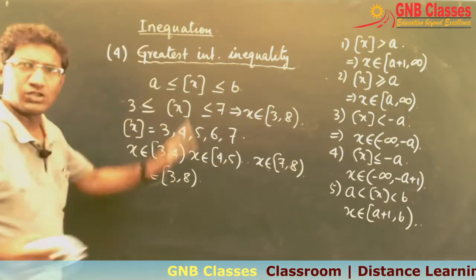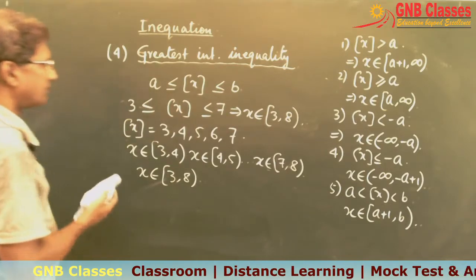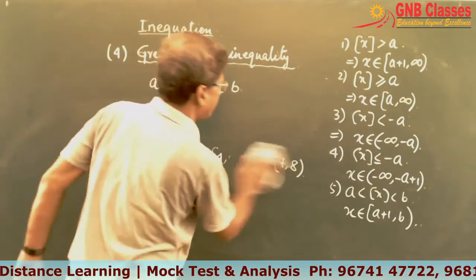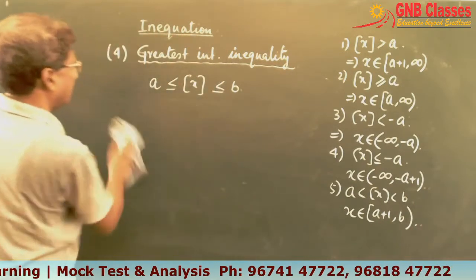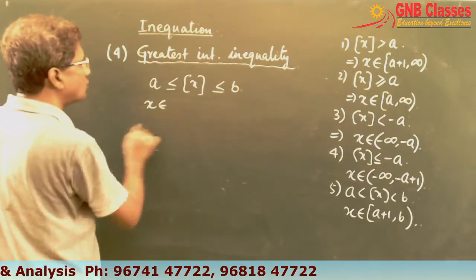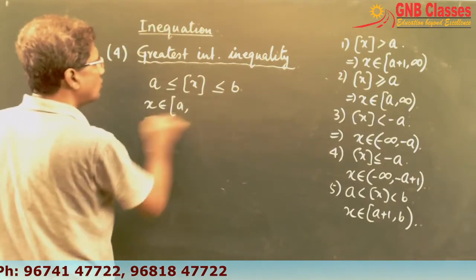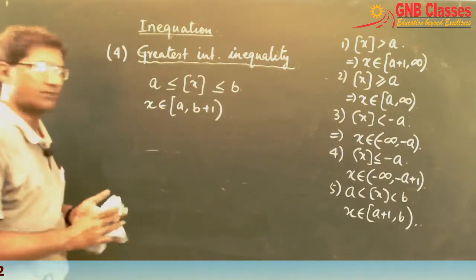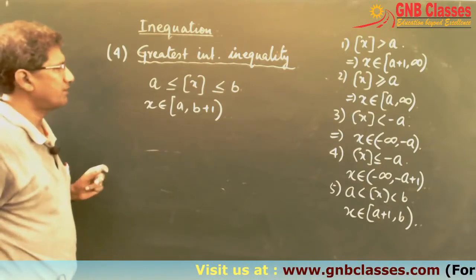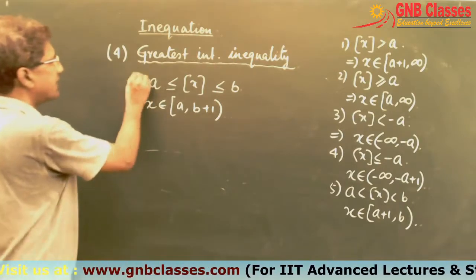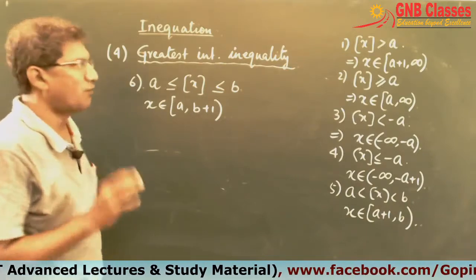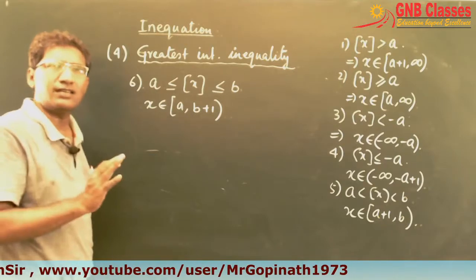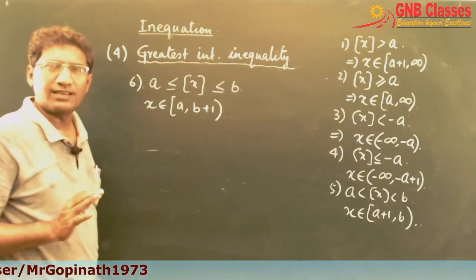So when ⌊x⌋ lies from 3 to 7, the final answer is x belongs to [3, 8). The sixth formula is: when a ≤ ⌊x⌋ ≤ b, then x belongs to [a, b+1). Remember these six formulas to solve any kind of greatest integer function inequality.